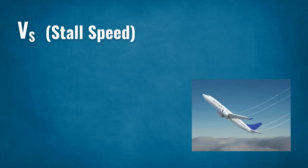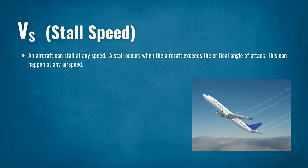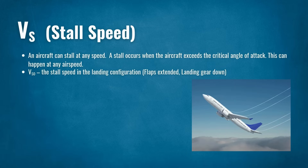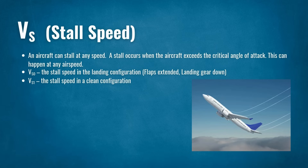VS represents stall speed — essentially the lowest speed at which your aircraft can maintain steady flight. However, an aircraft can stall at any speed, since a stall occurs when the aircraft exceeds the critical angle of attack. For example, a pilot descending at high airspeed, far from VS, may stall if they quickly pitch up and exceed the critical angle of attack. VS0 is the stall speed in the landing configuration; VS1 is the stall speed in a clean configuration. The difference between stall speed with flaps down versus flaps up is significant. Every manufacturer determines the stall speed for their aircraft, tested with the throttle closed at maximum takeoff weight.